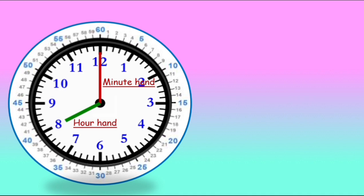If you look carefully, the interval between two numbers is five minutes: 5, 10, 15, 20, 25, 30, 35, 40, 45, 50, 55, and we come back to 60.